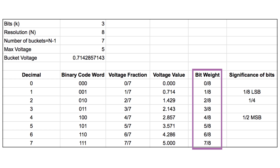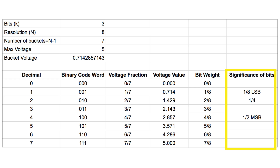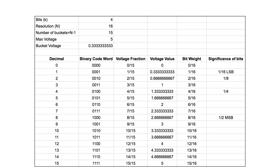Then we get a bit weight — this is the decimal number divided by the resolution. The last column shows you the bit significance. You can see that the bit significance corresponds to what position the 1 is in your binary code word. Here is an example for a 2-bit converter, and here is one for a 4-bit converter. If you add the voltages from the significant bits, you will see that they all add up to the maximum voltage.